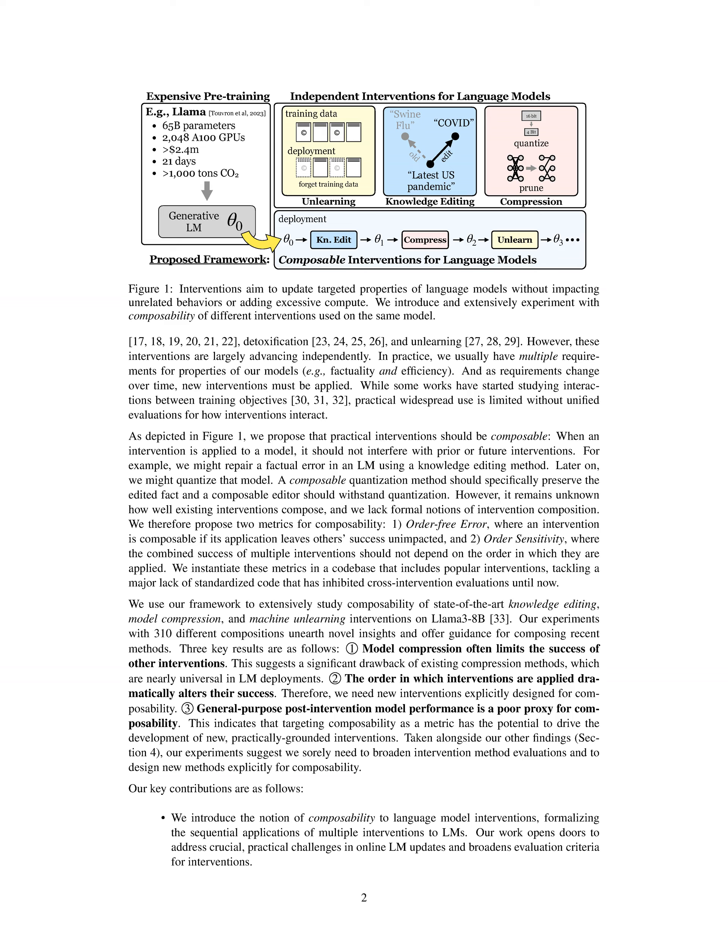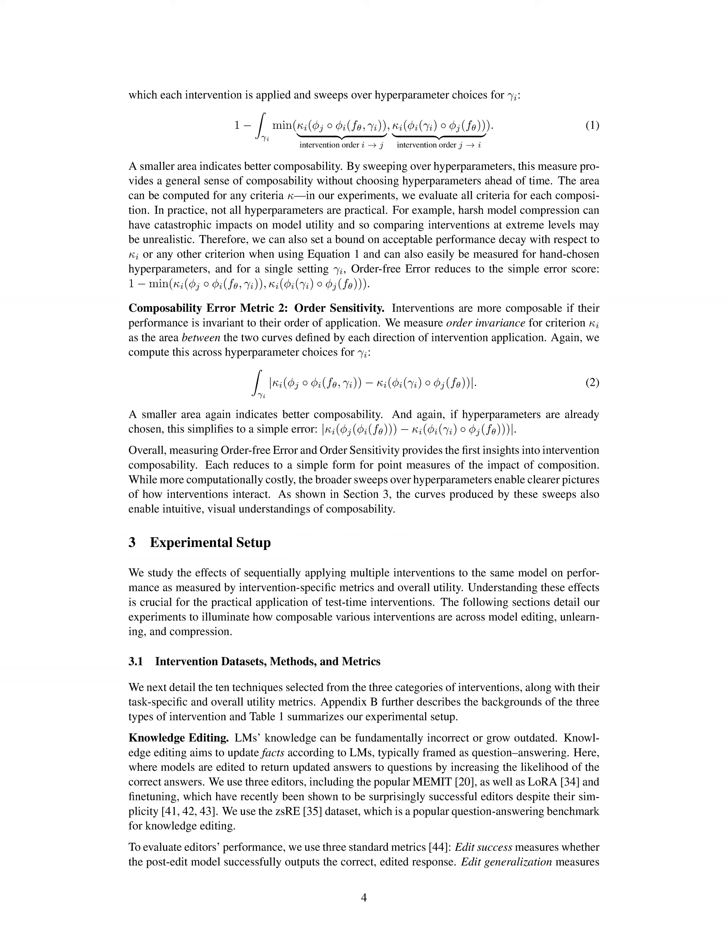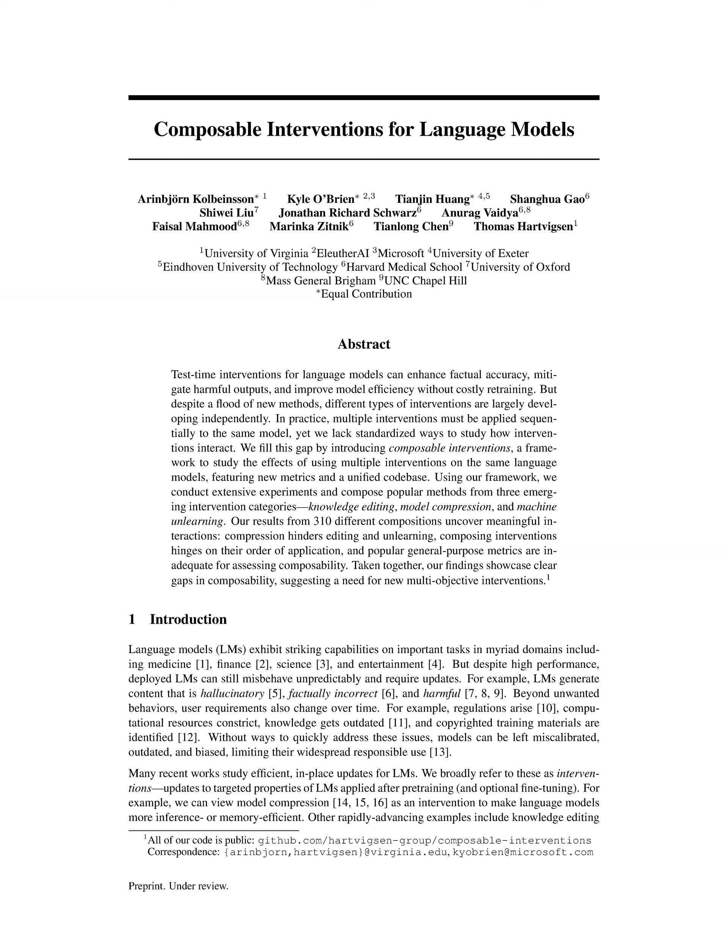Fourth, guiding intervention design: the method offers guidance for designing new interventions that target composability as a crucial property. By identifying interactions between knowledge editing, model compression, and machine unlearning interventions, it highlights the need for interventions explicitly designed to be composable. Fifth, enabling practical applications: the experimental framework allows for the practical application of test-time interventions by studying sequential application to the same model, enabling researchers and practitioners to make informed decisions when choosing interventions to compose, ensuring overall model utility is maintained.